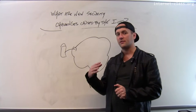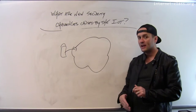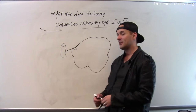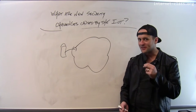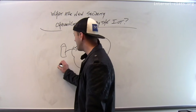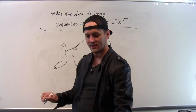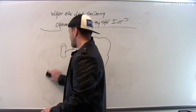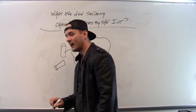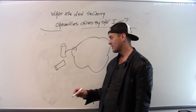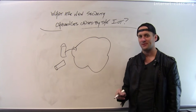Even something as innocuous as a toaster has attack vectors that can be launched against it. Now, if you start to think about other types of IoT devices, the attacks are a little bit more obvious. If I have an IoT-connected video camera in my house — like a security camera that's part of my home security system — that has some pretty obvious problems with it.